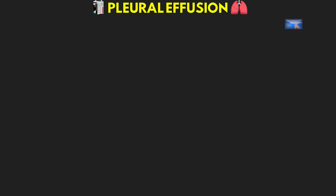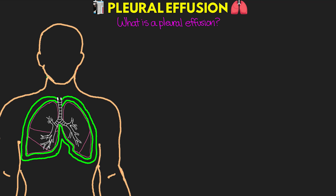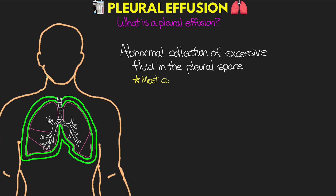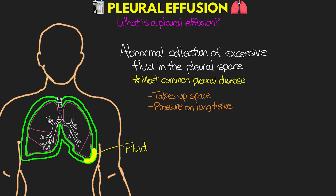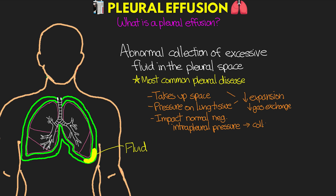So what is a pleural effusion? A pleural effusion is essentially an abnormal collection of excessive fluid in the pleural space, and it's really the most common pleural disease. It's potentially the result of many different conditions. The collection of fluid in the pleural space takes up that space and puts pressure on the lung tissue, leading to decreased expansion of the lung, decreasing the availability for gas exchange, and can also impact the normally negative intrapleural pressure leading to collapse of the lung. The size of the effusion is not necessarily directly correlated with the severity of the symptoms.